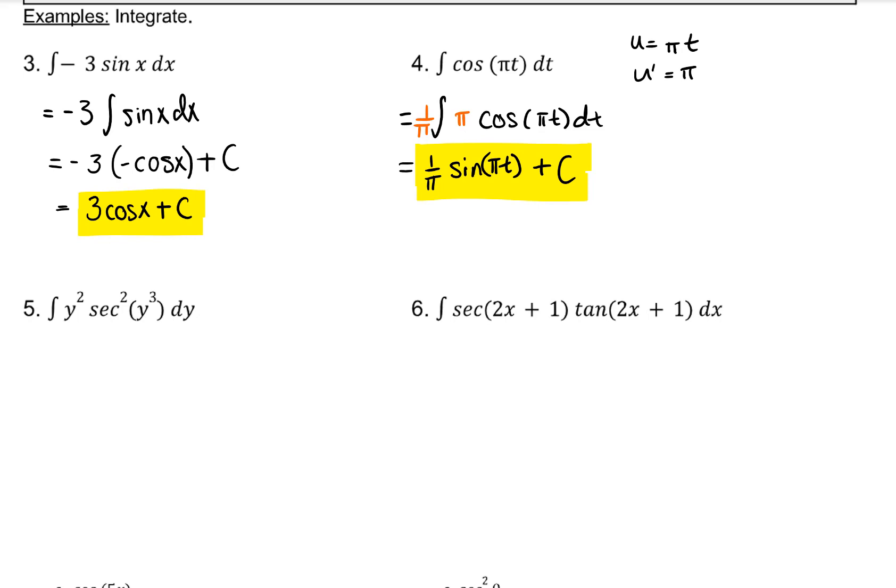The integral of secant squared u, u prime, is tangent u plus c. So let's see if we have that. u would be y cubed, making u prime 3y squared. We do have a y squared in the integrand. We just need to multiply by 3 and 1 third.